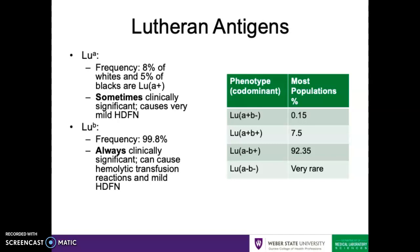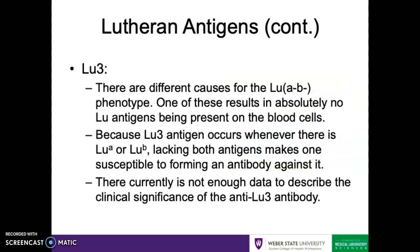Although it's far rarer for people to be both A and B negative. Now with regard to the Lutheran 3 antigen — the Lutheran 3 antigen is associated with the Lutheran A and B antigens on the red blood cell. Individuals who are Lutheran A and B negative, who have no Lutheran antigens on their red blood cells, are susceptible to making an antibody against this Lutheran 3 antigen. Unfortunately, there's not a lot of information on the anti-Lutheran 3 antibody, so information about its clinical significance just isn't available right now.